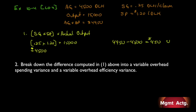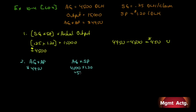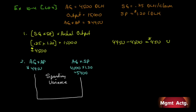Number two: break down the difference into a variable overhead spending variance and a variable overhead efficiency variance. Actual quantity times actual price is already given as forty-nine fifty. Actual quantity times standard price: forty-five hundred times one twenty equals fifty-four hundred dollars. The spending variance is forty-nine fifty minus fifty-four hundred, which equals negative four hundred and fifty — four hundred and fifty dollars favorable.